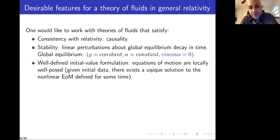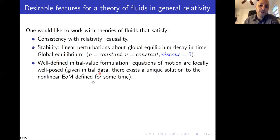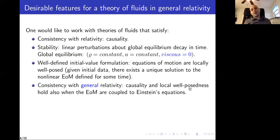You want a well-defined initial value formulation, which means the equations of motion need to be locally well-posed — meaning that given initial data, there exists a unique solution to the nonlinear equations of motion defined for some time. You also want consistency with general relativity, meaning causality and local well-posedness should also hold when the equations of motion are coupled to Einstein equations.